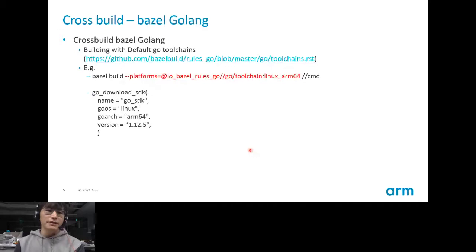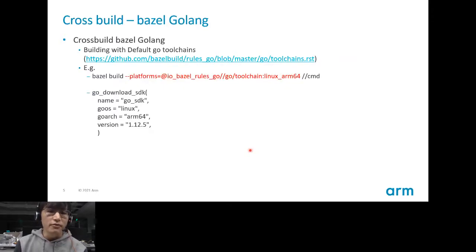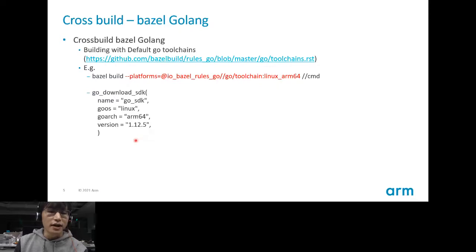First, for the Golang binary, it is quite easy to do cross-compilation. You only need to use the default Golang toolchain in Bazel. After you set the platform and set the toolchain as Linux ARM64, Bazel will download the related Golang SDK for you. It will download the Golang SDK with GOARCH=arm64 and GOOS=linux, and Bazel will use this SDK to do the cross-compilation.